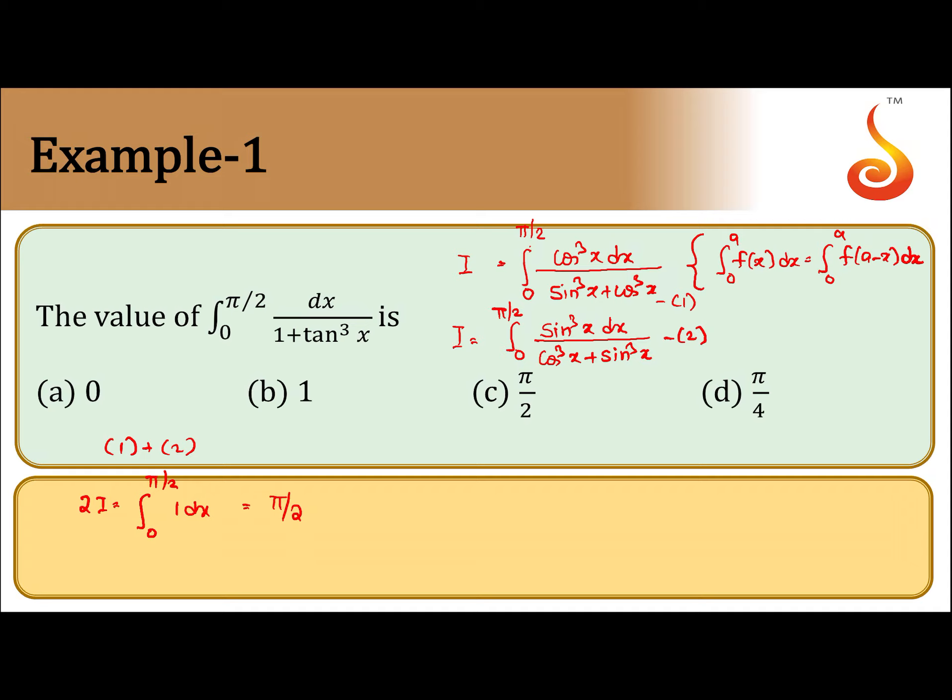So therefore I is equal to pi by 4. So what actually happens here is: sin of pi by 2 minus x is equal to cos x, cos of pi by 2 minus x is equal to sin x. Using the same concept, integral from 0 to a of f(x) dx equals integral from 0 to a of f(a minus x) dx.